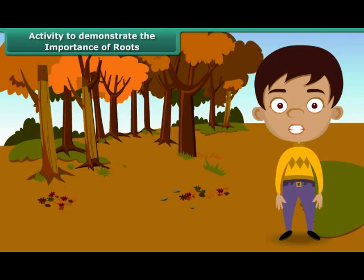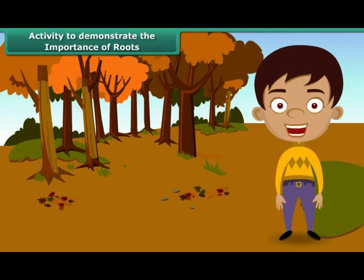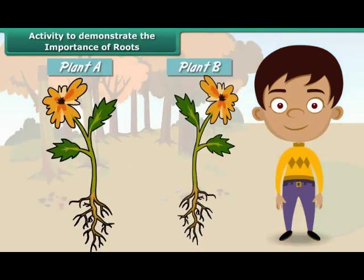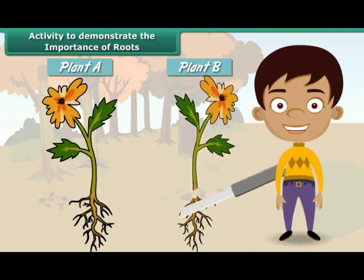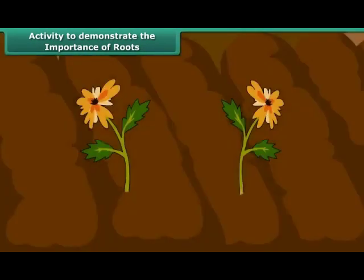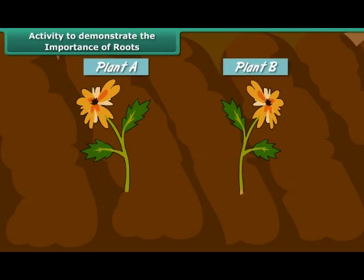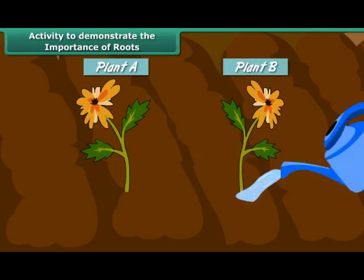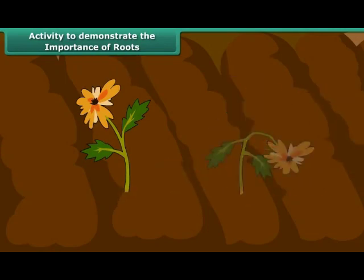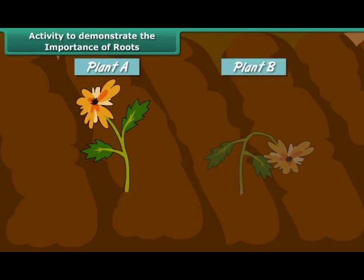Let us perform an activity to demonstrate the importance of roots in the life of a plant. Take two plants, A and B. Cut off the roots of plant B. Plant both plants A and B in the soil and water them every day. After a few days, plant A appears as healthy as it was on the first day, whereas plant B appears wilted.